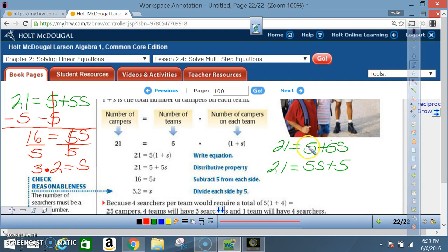Now some of you may be a little bit confused on it being a positive 5. So 21 equals 5 plus 5s, that's where we are right here. Don't forget, 21 equals 5 plus 5s can be rewritten as 21 equals 5s plus 5.